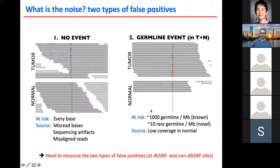Now — how do we distinguish somatic from germline mutations? Looking at an IGV snapshot, you can see a pileup of reads with a mutation in the tumor sample where the normal has none. But in this case, it's not actually a mutation — it's just sequencing noise that happened to appear in the tumor but not the normal. This is one type of false positive: when we compare tumor to normal, the normal is clean, but the tumor shows a few reads that could be due to sequencing error.